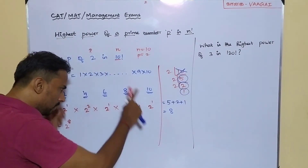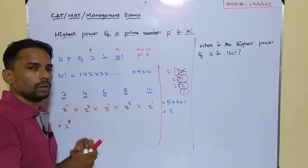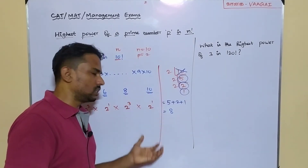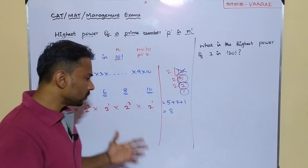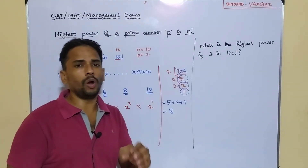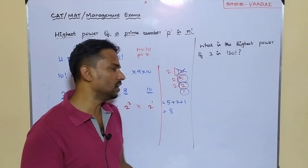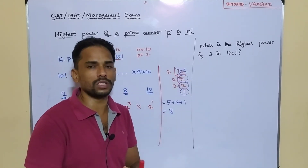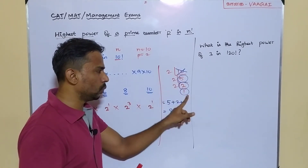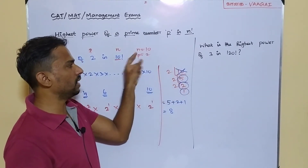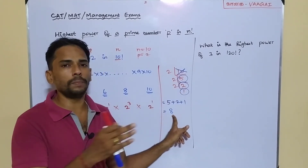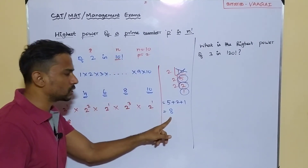That gives you the answer 8, which is the highest power of 2 in 10 factorial — matching our basic approach result. So the process is: take n, repeatedly divide by P taking only the quotient, strike out the first number, and add all the other quotients. That sum is the highest power of P in n factorial.